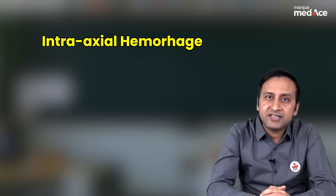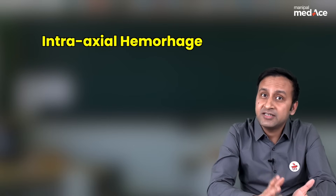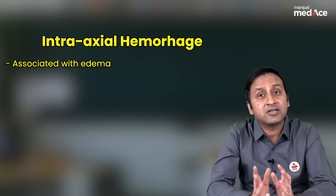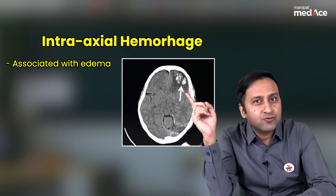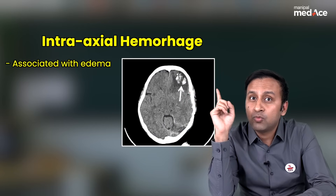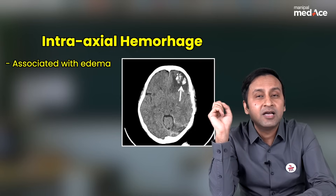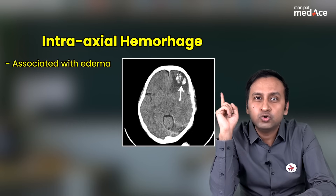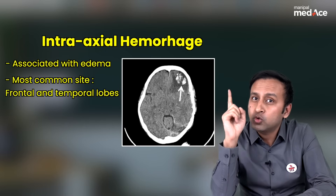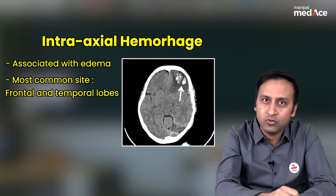Let's talk about the intraaxial bleeds. Intraaxial bleeds are the ones which occur inside the brain parenchyma and are associated with edema. In this case, you can see there are multiple small bleeds in the frontal lobe which are associated with perifocal edema. This is a classical example of contusions, and the most common site of contusions is the frontal and temporal lobes.